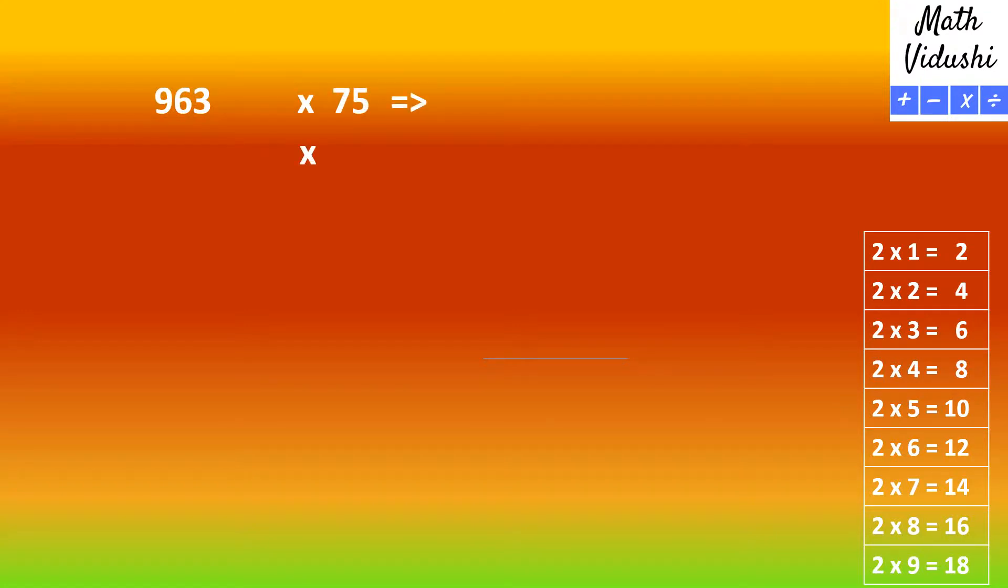963 multiplied by 75. So you first multiply the number by 100 which is very easy. You just add two zeros, 96300. Next you divide 96300 by 2, 48150.